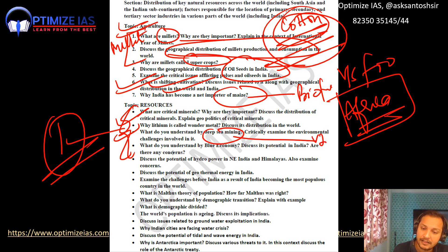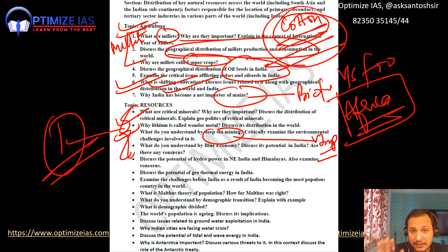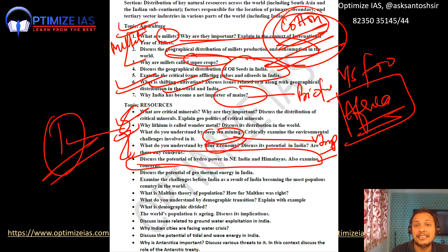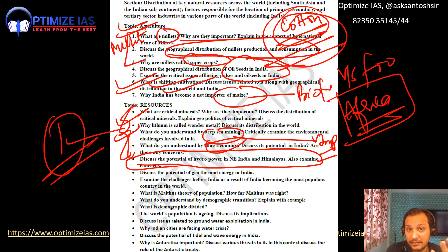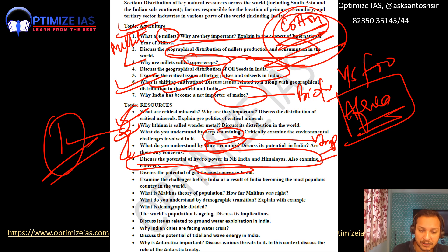Deep sea mining is very important — prepare the challenges including environmental ones. Next: blue economy. Hydropower in the Northeast and Indian Himalayas has a very high chance of being asked — what are the challenges given seismically active regions? Geothermal energy, tidal energy, and wave energy are also important topics.